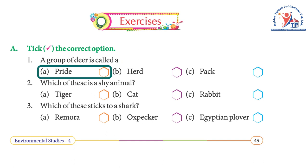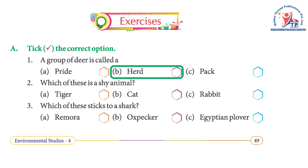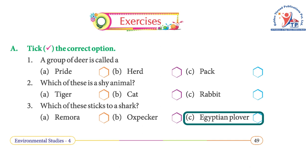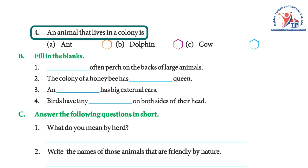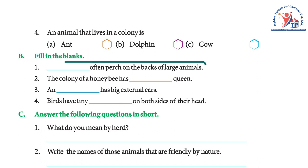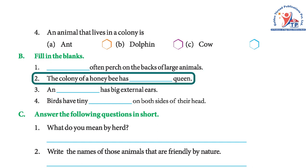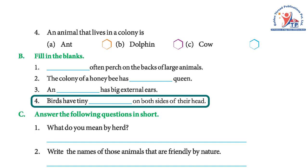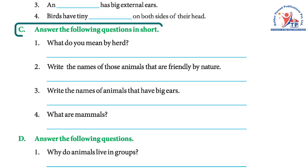Exercise — Tick the correct option: 1. A group of deer is called a herd. 2. A shy animal among tiger, cat, and rabbit is the rabbit. 3. The animal that attaches to a shark is the remora. 4. An animal that lives in a colony is the ant. Fill in the blanks: 1. Cattle egrets perch on the backs of large animals. 2. The colony of a honeybee has one queen. 3. An elephant has big external ears. 4. Birds have tiny holes on both sides of their heads.